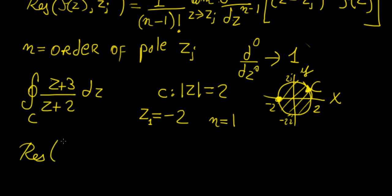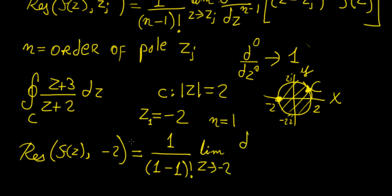So we're going to have residue of the function f(z), which is going to be this whole function, evaluated at the point -2. So now we're just going to plug these values into the formula. So this is going to be order 1, so (1-1)! = 0! = 1, times the limit as z approaches -2, times the derivative of, so we have 1-1, that's 0, so the 0th derivative, that just means that we just take the function as it is.